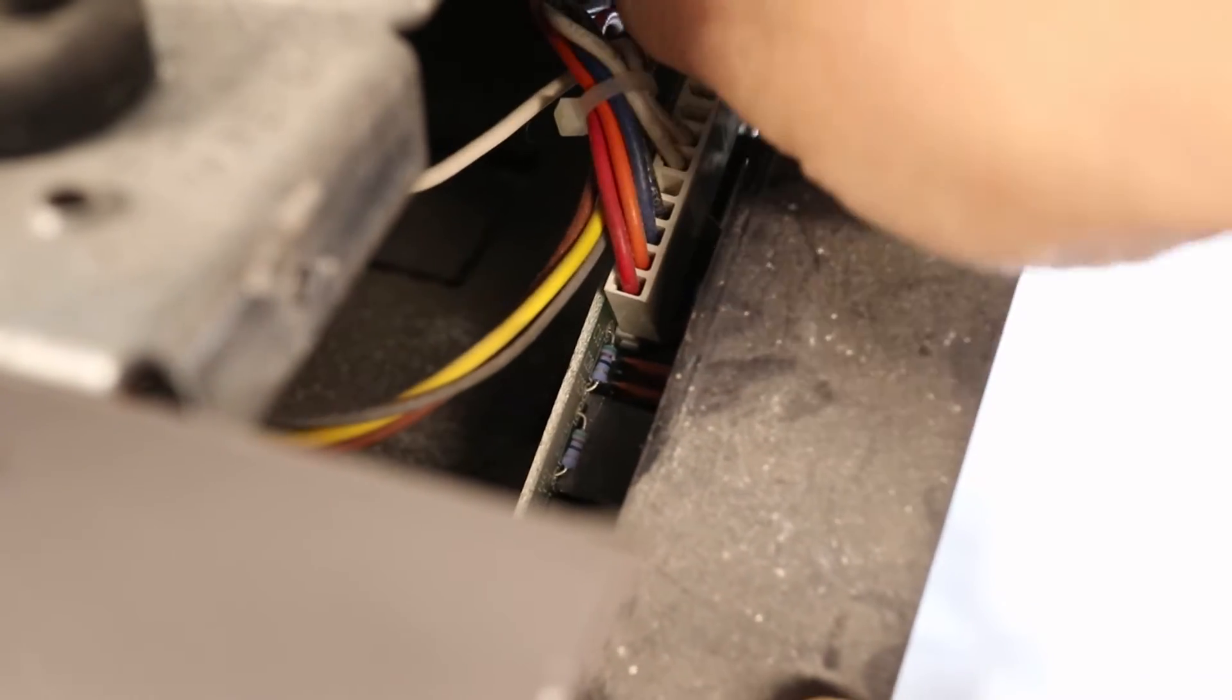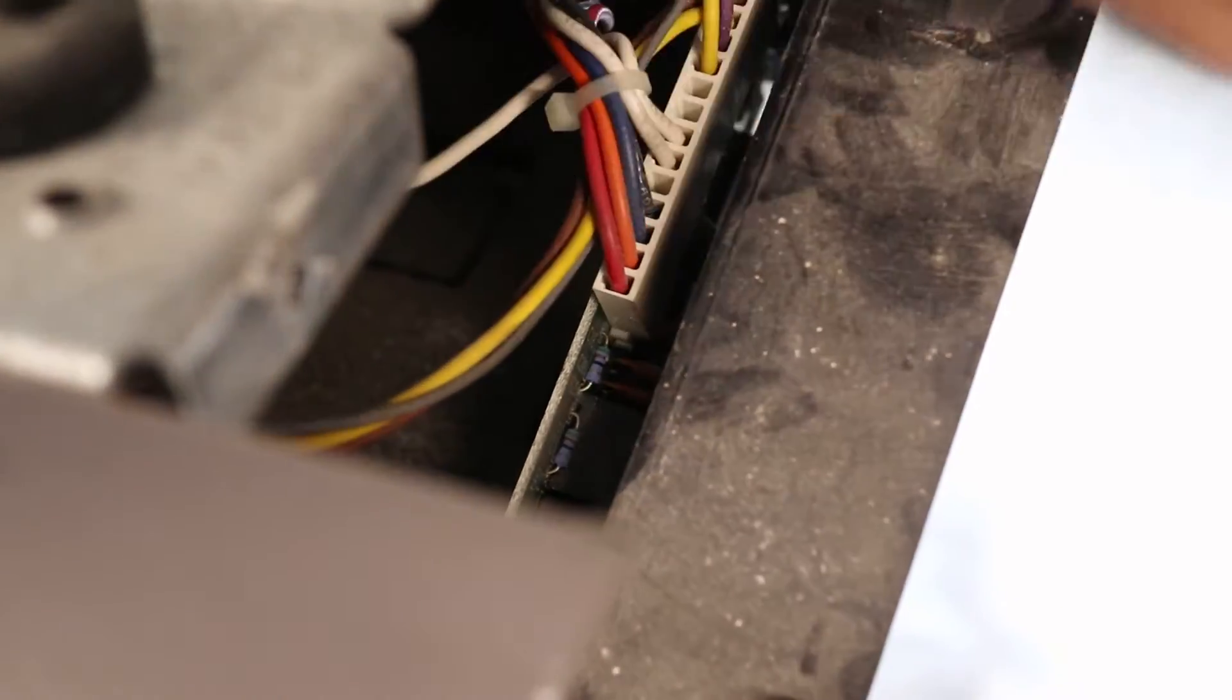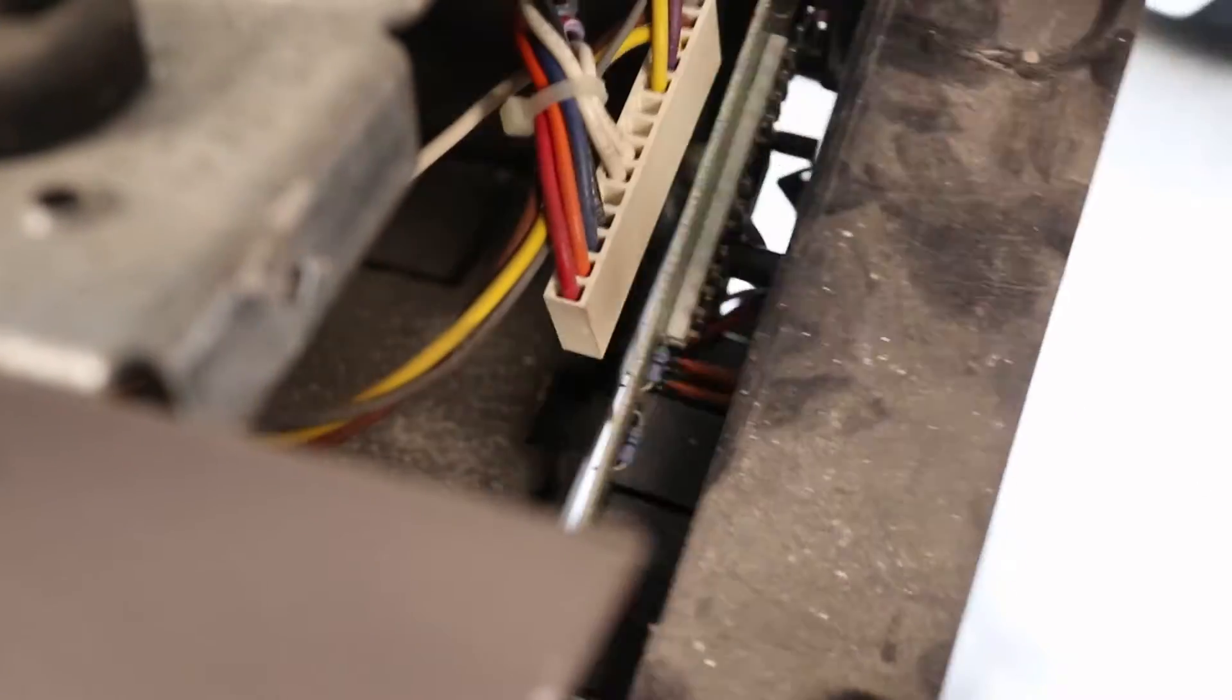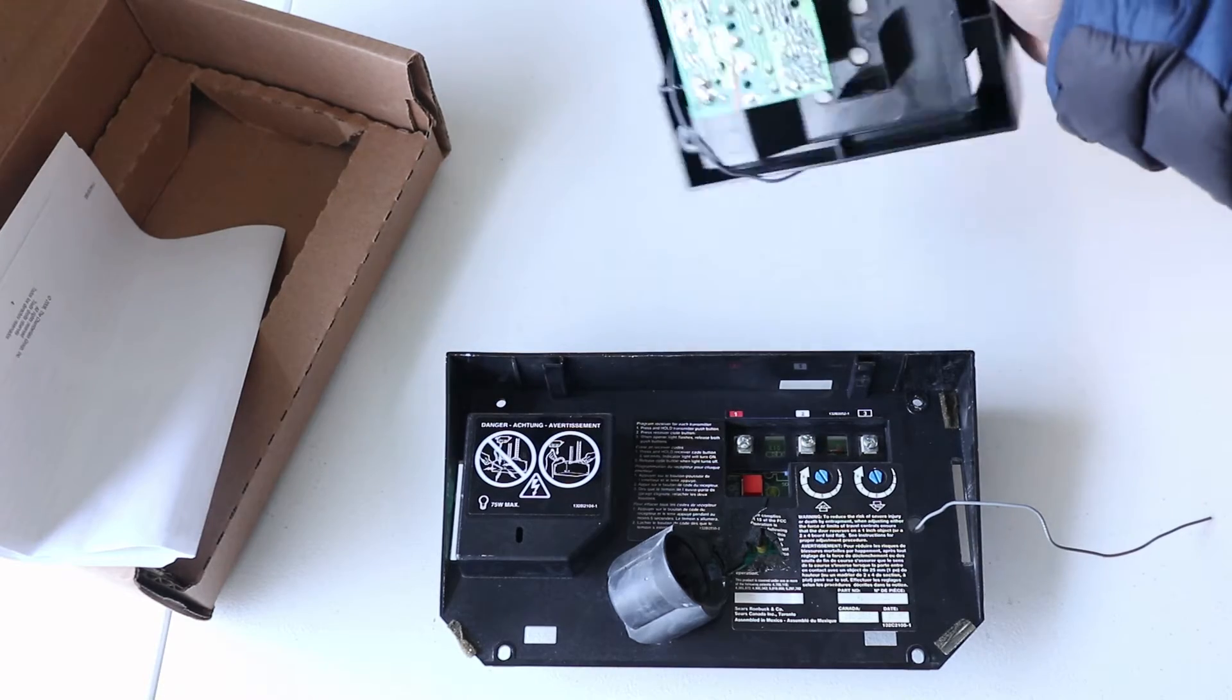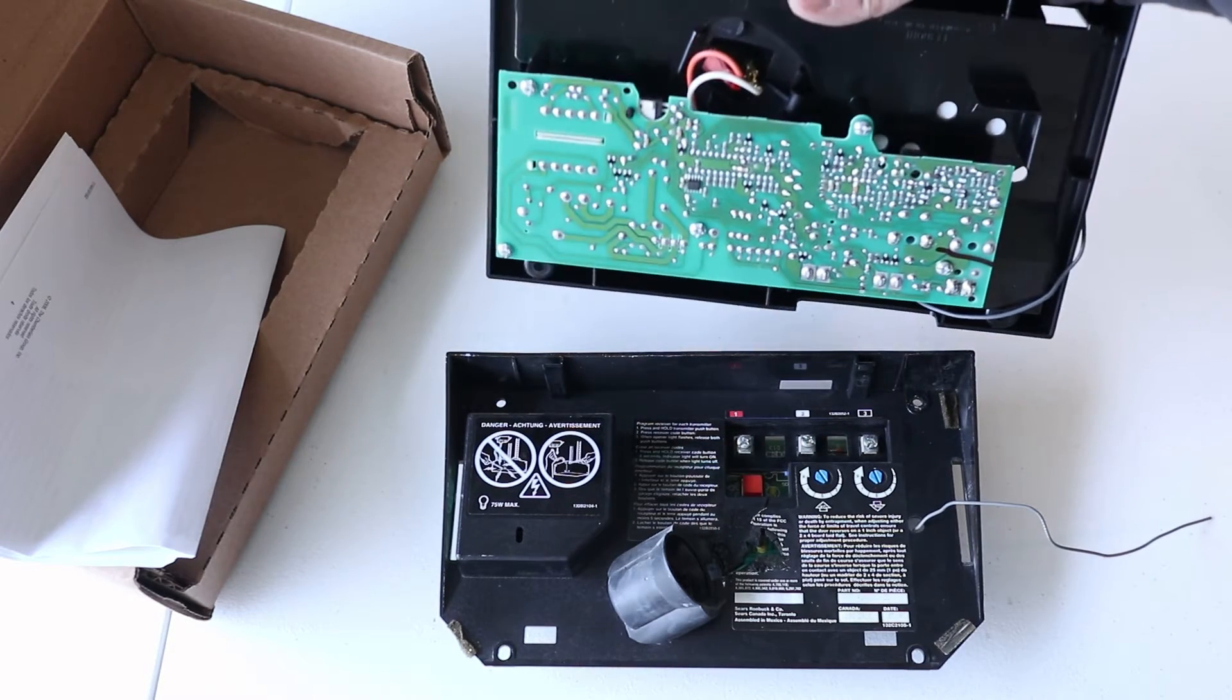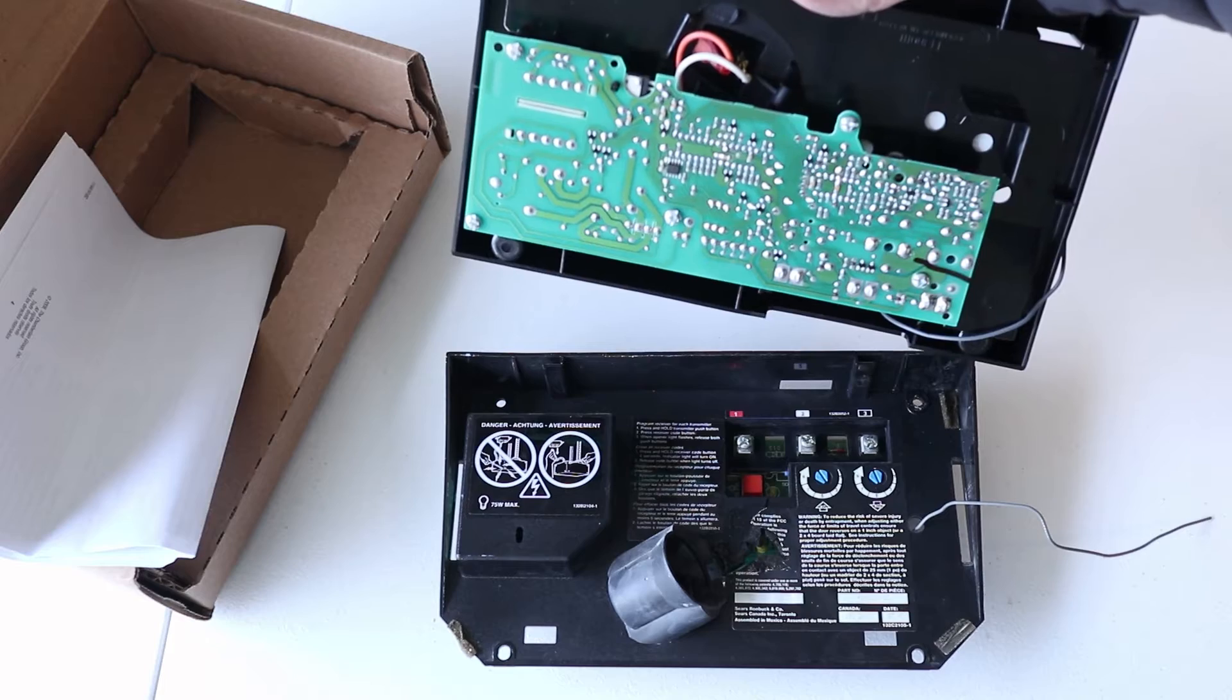Gently pull the wire connector from one side and then the other until it slips off. And here you can see the new part compared to the one I just removed. All I have to do is swap the circuit boards and the problem is solved.